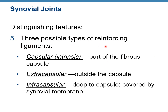There are three possible types of reinforcing ligaments for synovial joints: intrinsic or capsular ligament, which is part of the fibrous capsule; extracapsular ligaments outside of the capsule; and intracapsular ligaments deep inside the capsule. The fibrous membrane is the same as the intrinsic ligament. Extra ligaments that reinforce the joint can be extracapsular if outside the capsule, or intracapsular if inside.